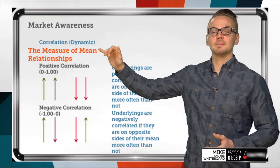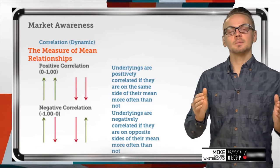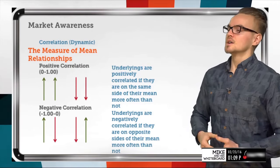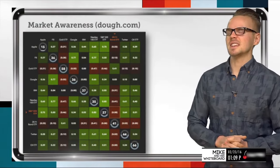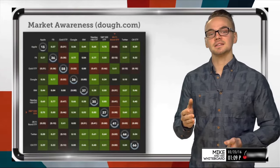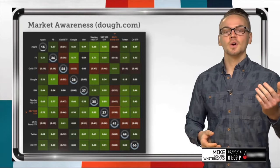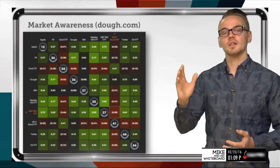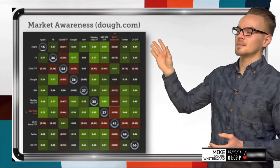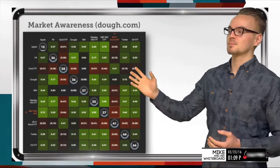It's important to understand that correlation is completely dynamic and backward-looking — we're looking at a specific time frame to see whether underlyings were on the same side of their mean more often than not, or on opposite sides. Now let's look at how we can view this in Dough. There's a beautiful market awareness correlation grid you can access for free at dough.com — you don't even need a brokerage account.